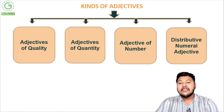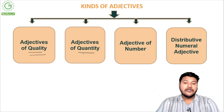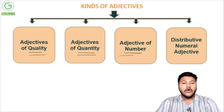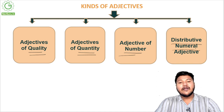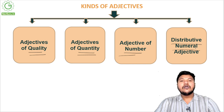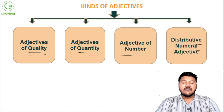Moving on, we'll look at the kinds or types of adjectives. There are mainly four types: the first is adjectives of quality, the second is adjective of quantity, the third is adjective of number or numeral adjectives, and the fourth is distributive numeral adjective. They're all pretty obvious from their names, but we'll go through each one.